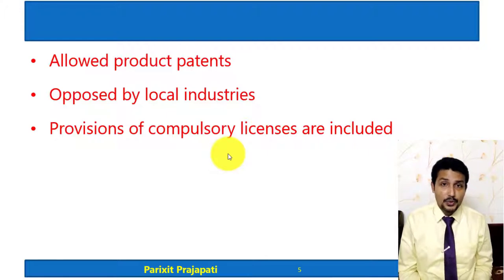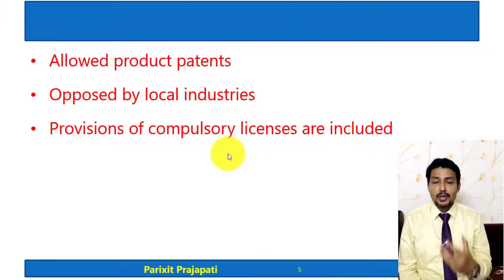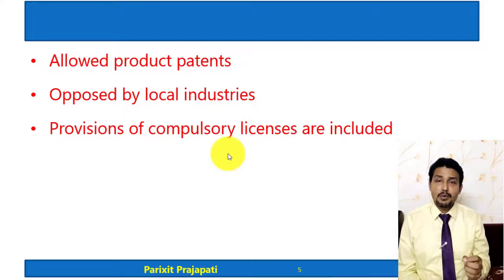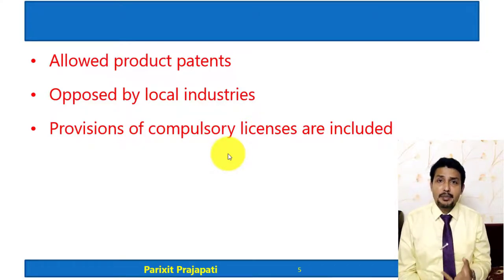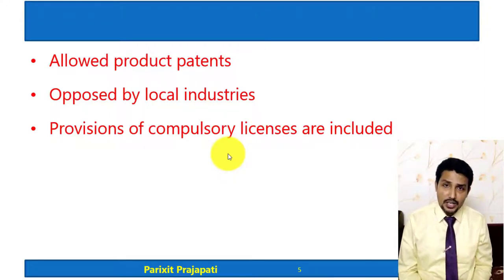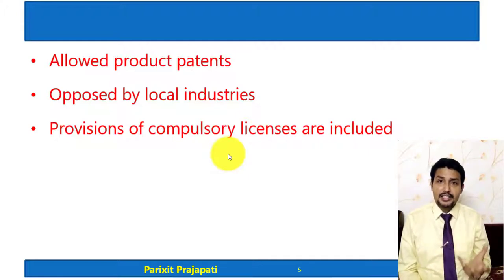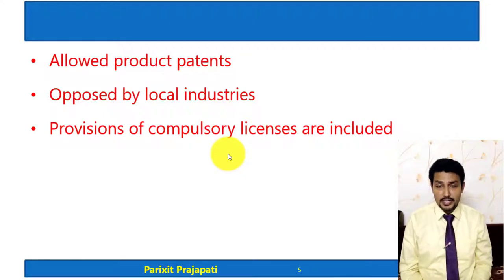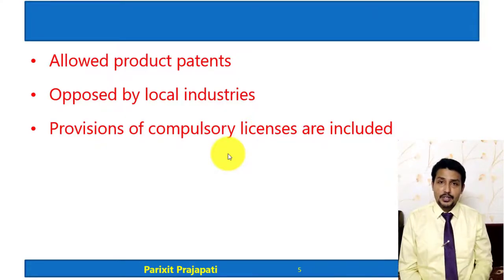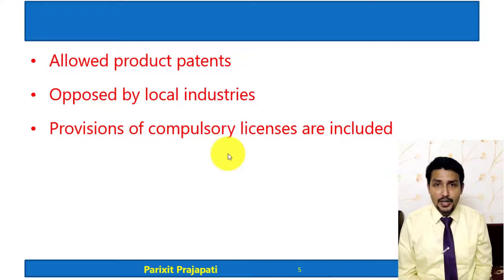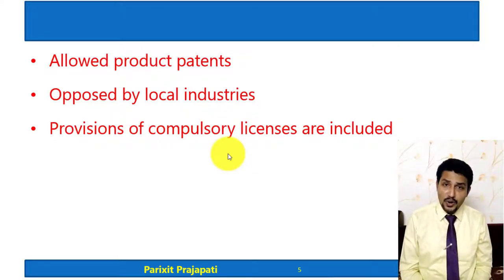Before the amendment, only process patents were allowed. After the amendment, product patents were allowed in the health and pharmaceutical sector. This was opposed by local industries because if a foreign pharmaceutical company takes a patent in India for their product, there may be a monopoly in the market — they may sell the drug at a higher price that Indian people cannot afford. Generic manufacturers could not manufacture that drug without a license, which led to strong opposition. As a result, certain provisions for compulsory licenses were added.